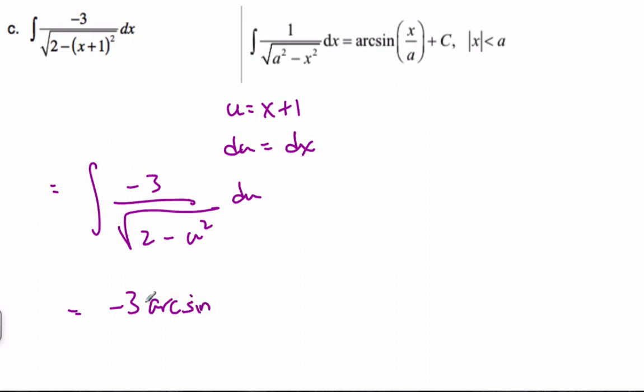Remember, with arcsin, there is no 1 over a value in front. And then this is going to be u squared, oh no, u squared, u over a, which will be the square root of 2 plus c.